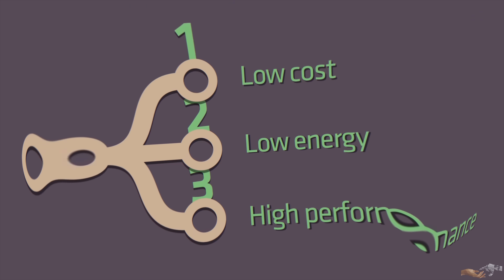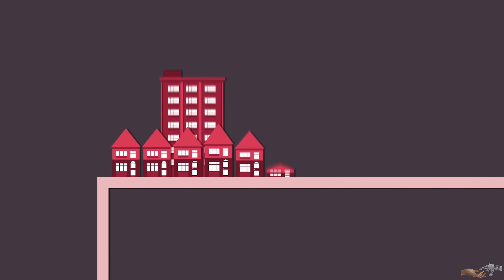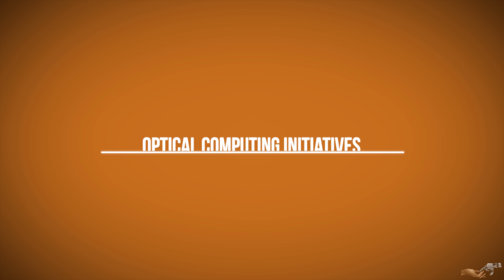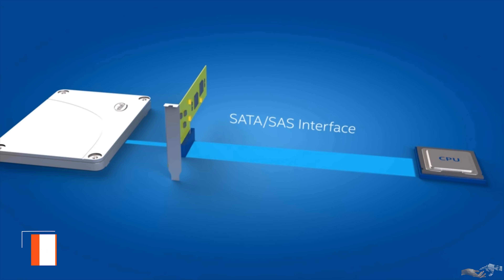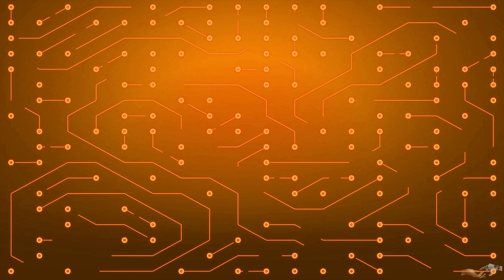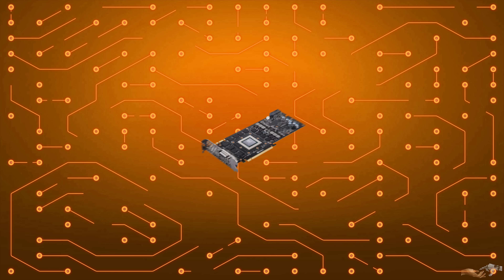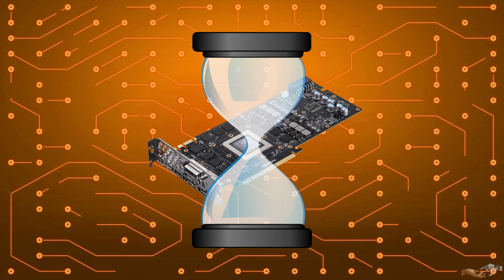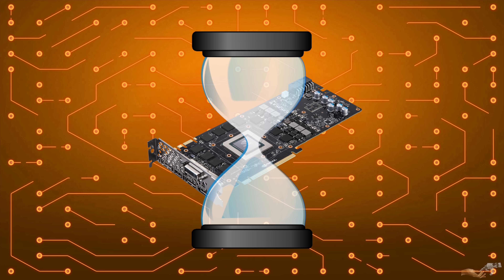As you can see, optical computers present many benefits over classical computers. As discussed in previous videos in this computing series, data transfer is one of the largest bottlenecks in computing performance. With optical computing and the ability to compute data in motion, this problem is solved. Unfortunately, solving one problem creates another — computing devices will now become the bottleneck. To solve this, there are various initiatives currently in research and development to push the field of optical computing devices forward.